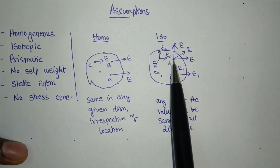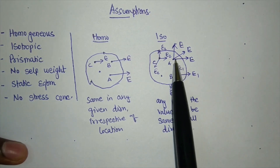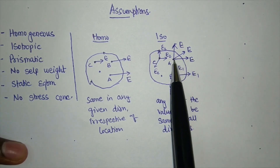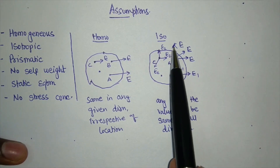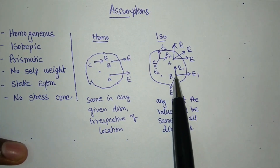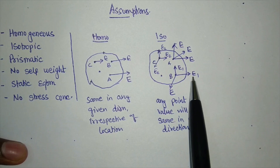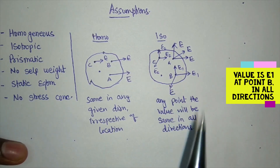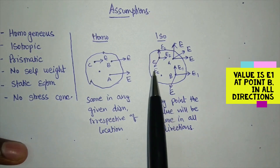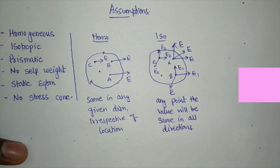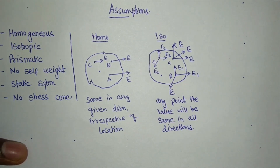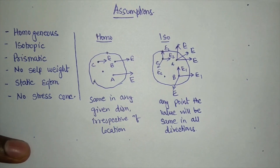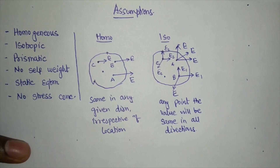At point A, if the value is E in one direction, it will remain E in all other directions as well. But if I go to point B and the value changes to E1, then E1 will remain the same in all directions at that point. So that is what we mean by isotropic nature and homogeneous nature.